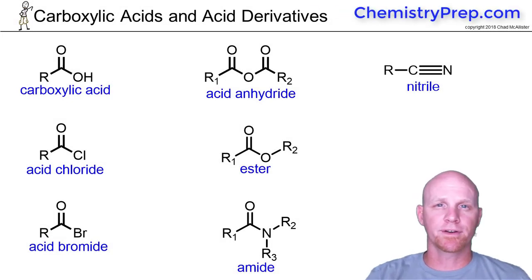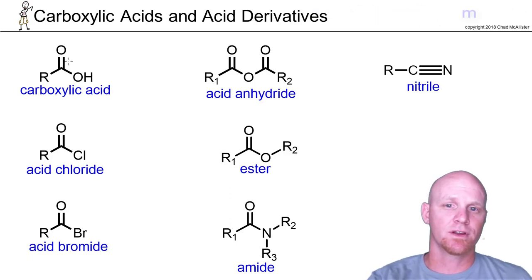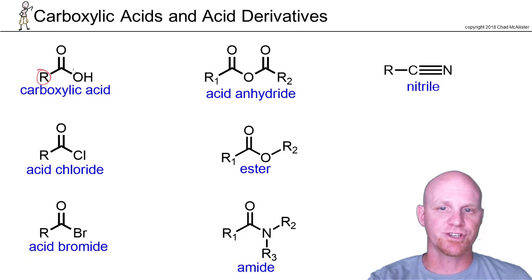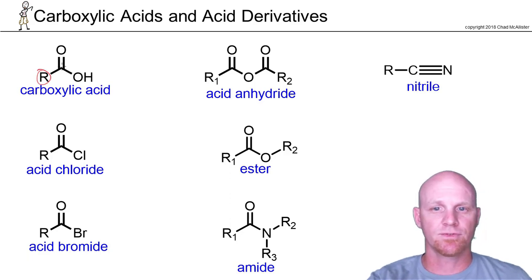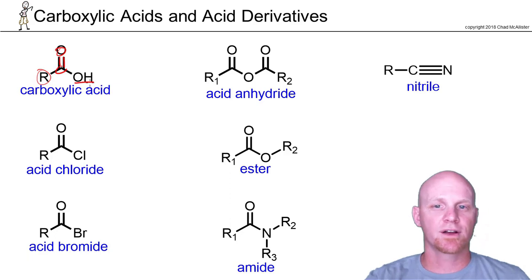Here we begin a chapter on carboxylic acids as well as carboxylic acid derivatives. You know what a carboxylic acid is. Here you've got a carboxyl group, you've got your variable carbon chain of any sort, you've got a carbonyl carbon-oxygen double bond, and then it's bonded to a hydroxyl group. So this is your carboxylic acid — you've seen it before.